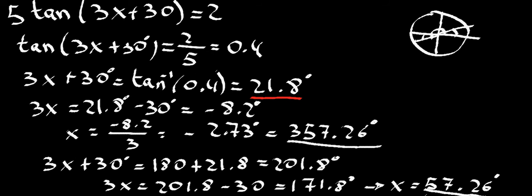These are the first two angles that fulfill the trigonometric equation. Now, because we have 3x inside our tan, we need to go around the unit circle three times. We've done the first turn, which gave these two angles, and now I'm going to start a new sheet with the second and third turn.